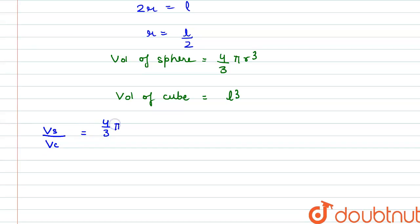Or we can put here the value of r as l by 2, so we get 4 by 3 into pi into l by 2 whole cube divided by l cube.